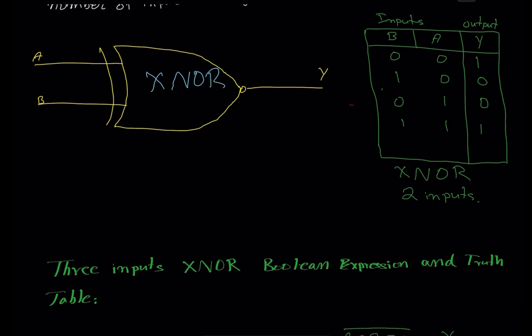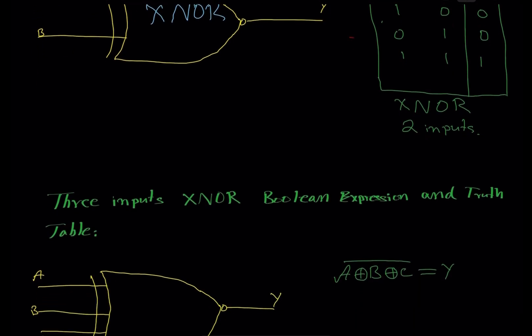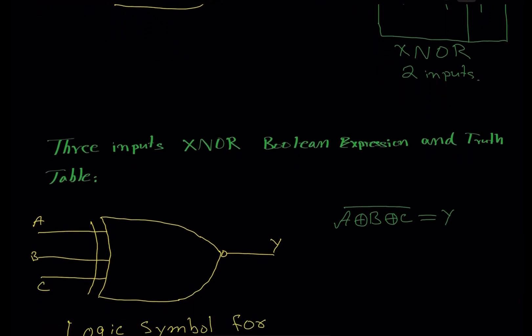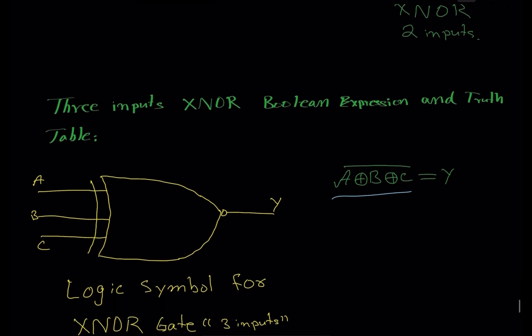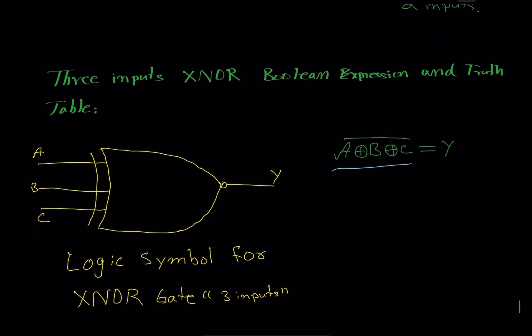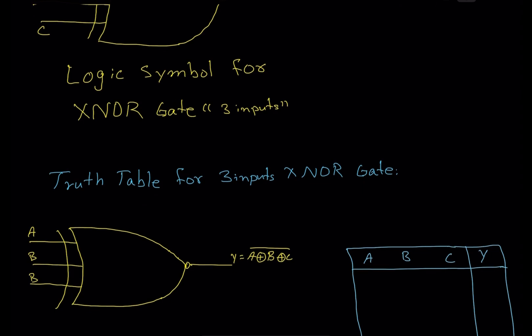Now we move to the three-input XNOR gate boolean expression and truth table. Same as the XOR gate but with an inverting bubble added, making it the XNOR gate. Inputs are A, B, and C, and Y is the output. The boolean expression: input A is XNORed with input B, and that is XNORed with input C to yield output Y. This is the logic symbol for the three-input XNOR gate.